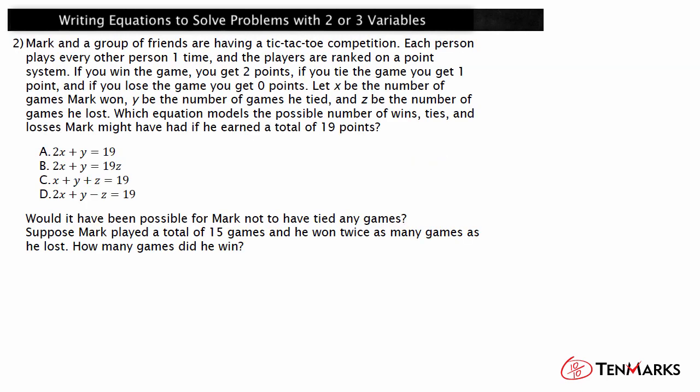Let's look at another example. Mark and a group of friends are having a tic-tac-toe competition. Each person plays every other person one time, and the players are ranked on a point system. If you win, you get two points; if you tie, you get one point; and if you lose, you get zero points. Let X be the number of games Mark won, Y be the number of games he tied, and Z be the number of games he lost. Which equation models the possible number of wins, ties, and losses Mark might have had if he earned a total of 19 points? The unknowns are the number of wins, ties, and losses.